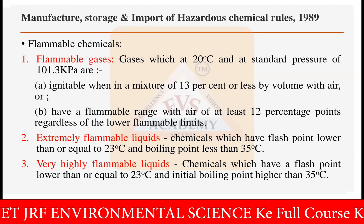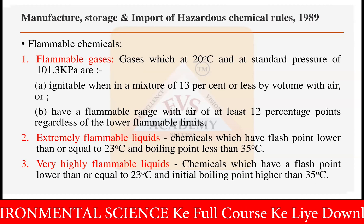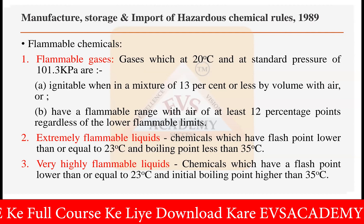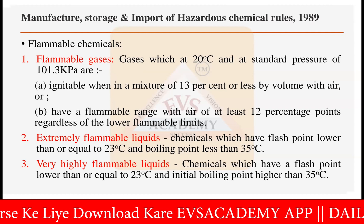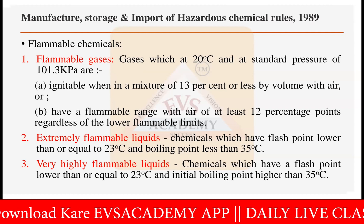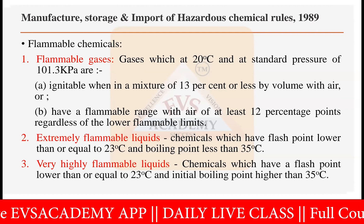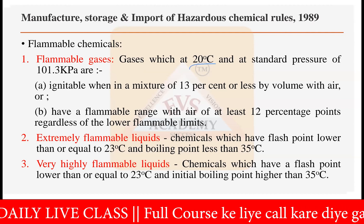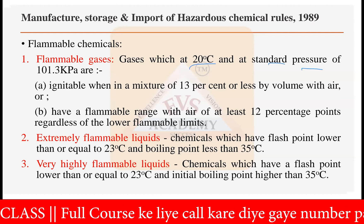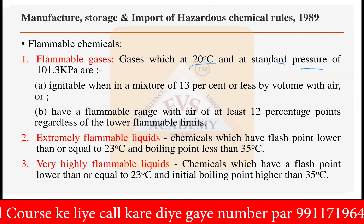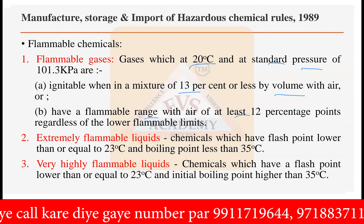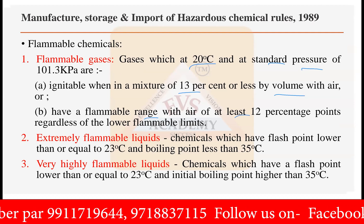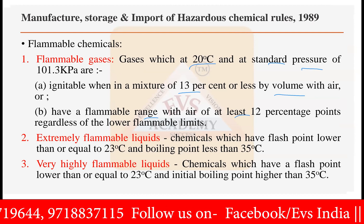A gas is classified as flammable if it catches fire at 20 degrees Celsius at a standard pressure of 101.3 kilopascal, or if it is ignitable when a mixture of 13% or less by volume with air, or has a flammable range with air of at least 12 percentage points regardless of the lower flammable limit. That particular gas is considered flammable.